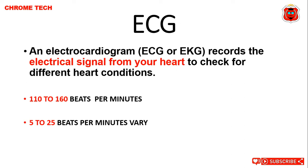A human being's heartbeat — 110 times to 160 times. If you change it, it will change from 5 beats to 25 beats. But the average is 110 beats to 160 beats.